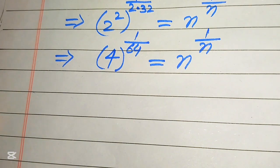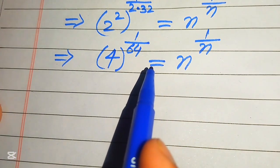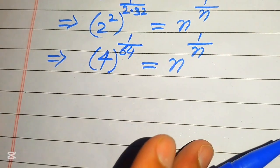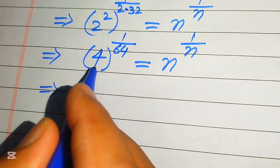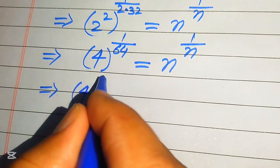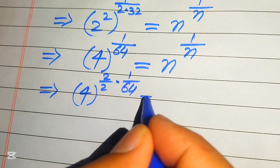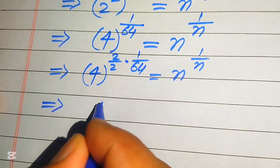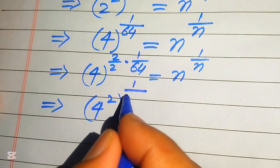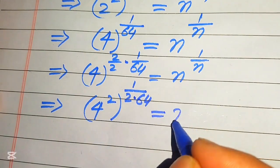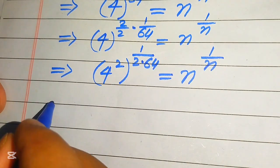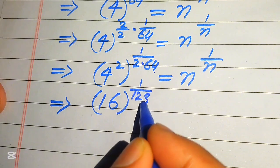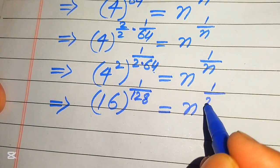We still don't have the condition where the exponent is the reciprocal of the base, so we repeat this process. We again multiply and divide the exponent by 2, giving 4 to the power of 2 over 2 times 1 over 64, equals n to the power of 1 over n. Moving this 2 inside: 4 squared with whole exponent 1 over 2 times 64. So 4 squared equals 16 and 2 times 64 equals 128, giving us 16 to the power of 1 over 128 equals n to the power of 1 over n.